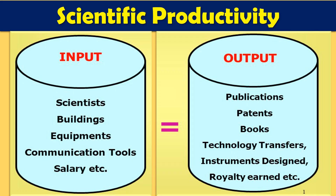Whenever we do research, we normally give some input to the scientific community in different forms like manpower — that is scientists — then different infrastructures like buildings, labs, different resources, equipment, instruments, central equipment facilities, different analytical instruments, communication tools, incentives, salary. These are called input. As a result of this input, we get some kind of output, that is scientific literatures and scientific outputs, which can be measured by publications, patents, books, technology transfer to the industry, instrument designs, methodology modifications, and royalty earnings.